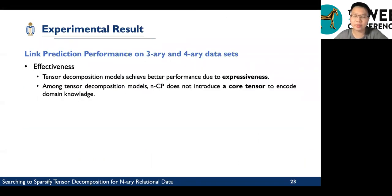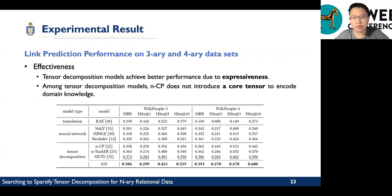First, the link prediction performance on the three-ary and four-ary dataset. About effectiveness, we can see that tensor decomposition models achieve better performance than the translation and neural network models due to the expressiveness. And among the tensor decomposition models, NCP does not introduce a core tensor to encode the domain knowledge, so its performance is not as good as N-Tucker, GETD, and S2S.